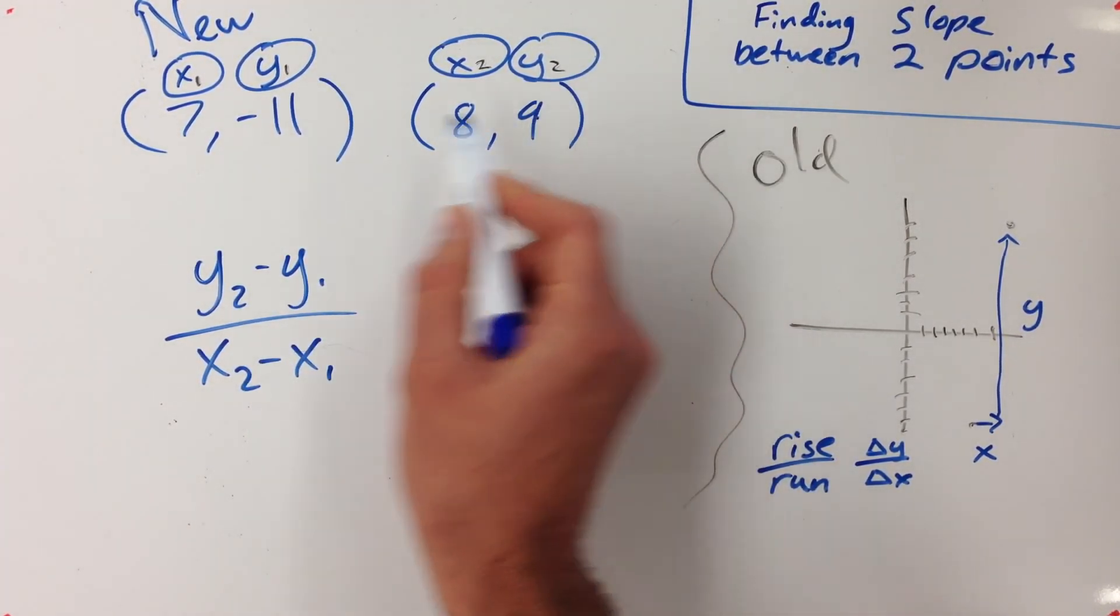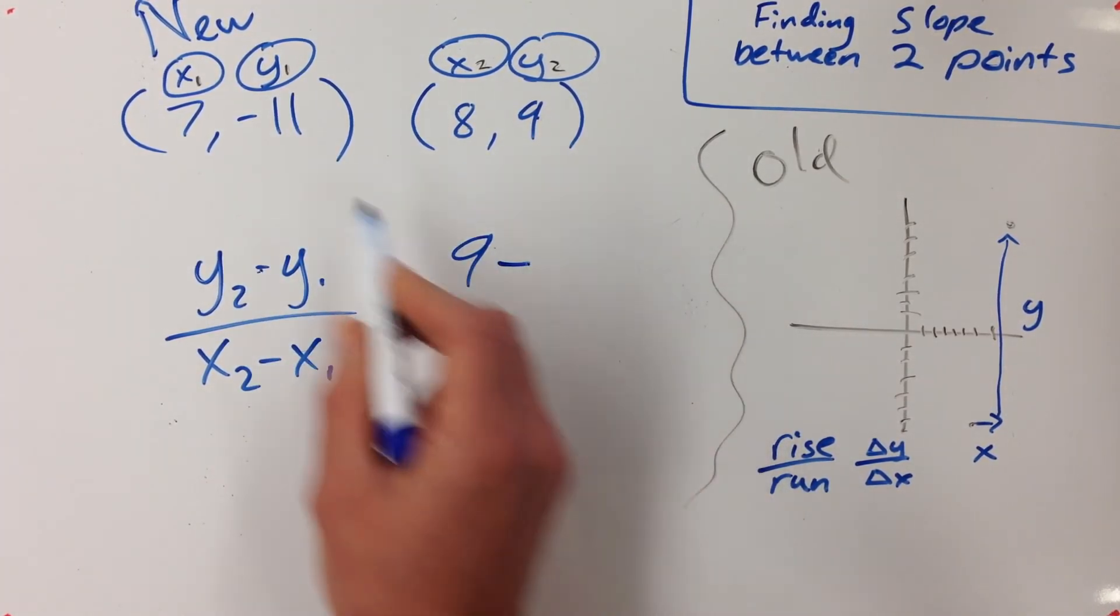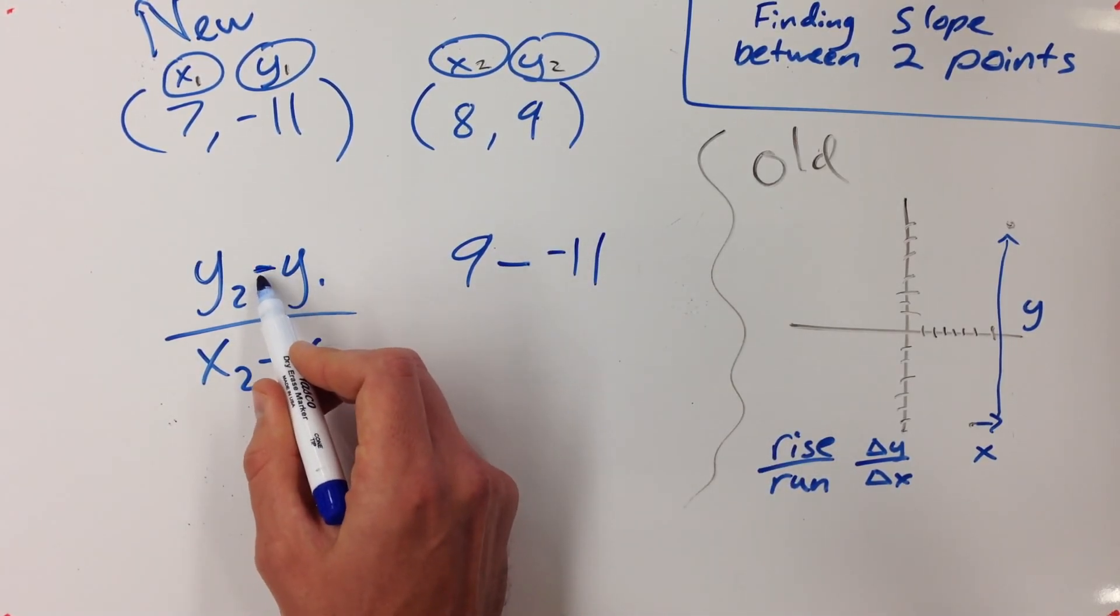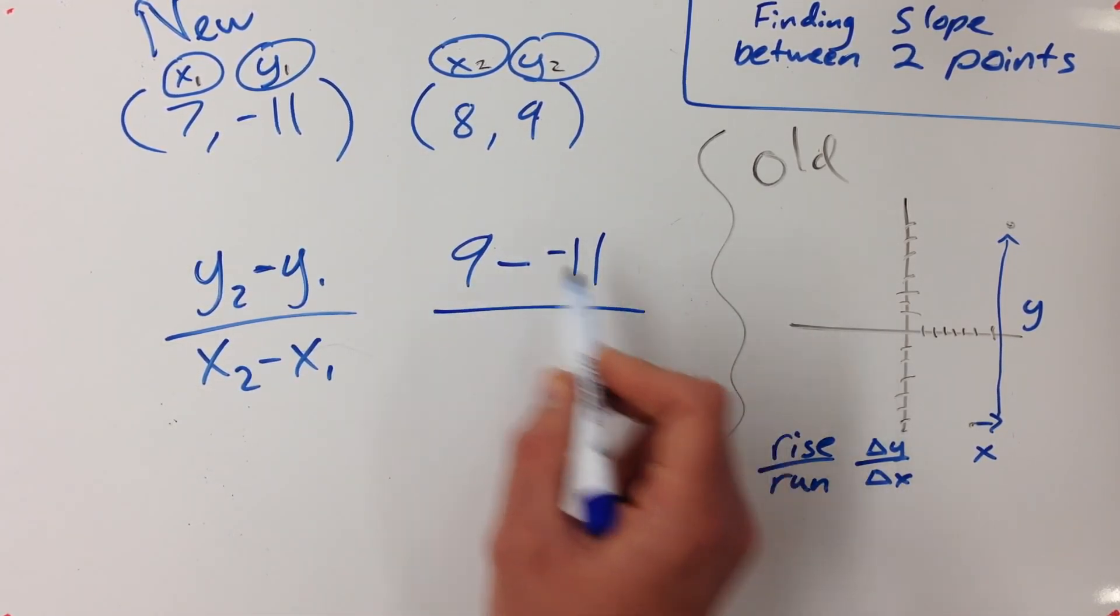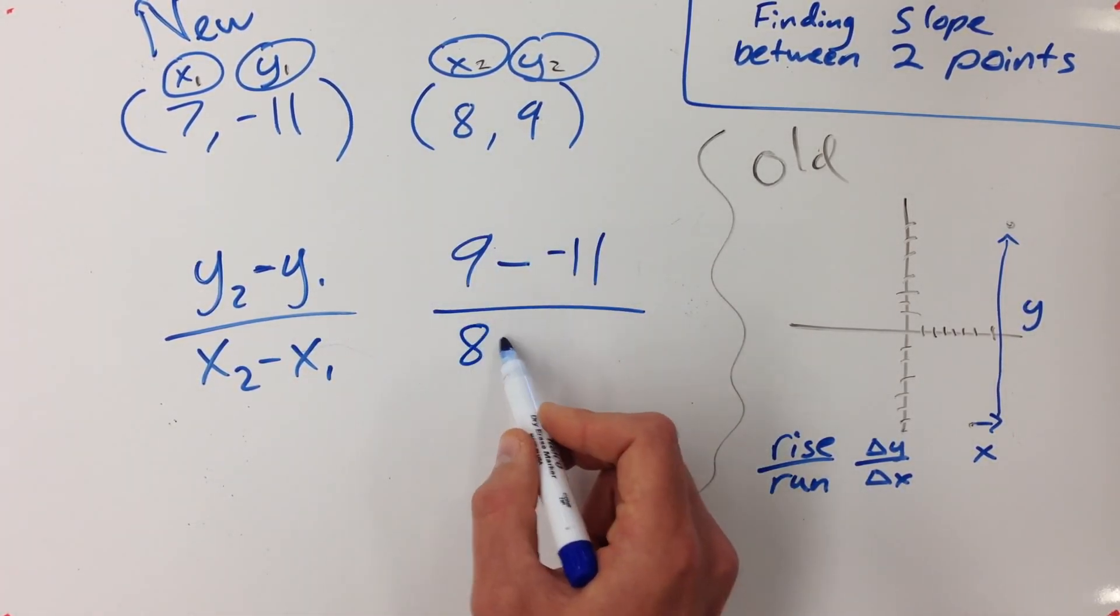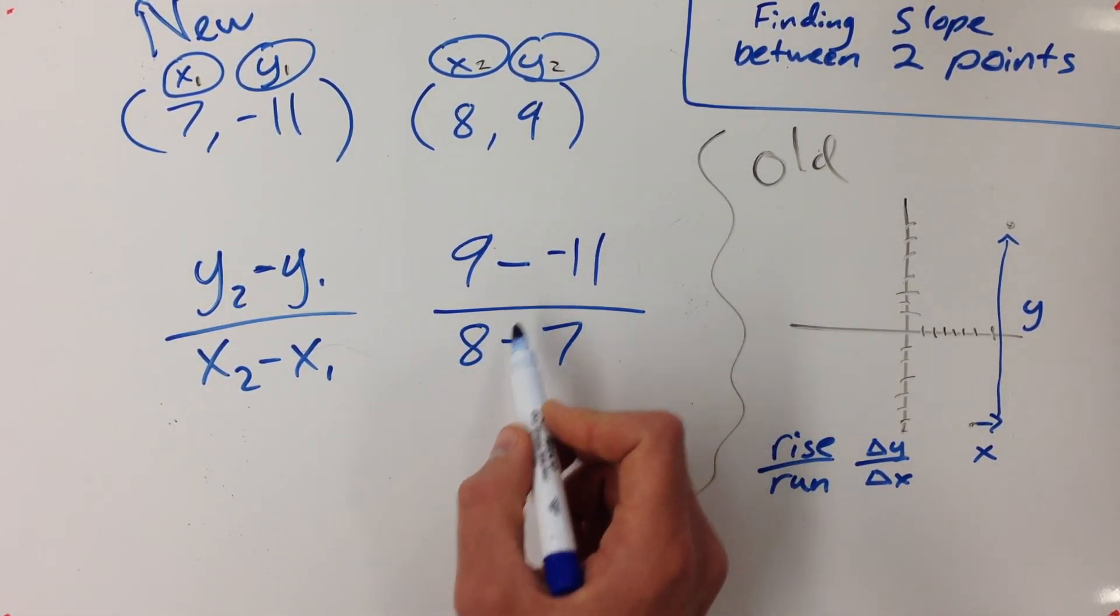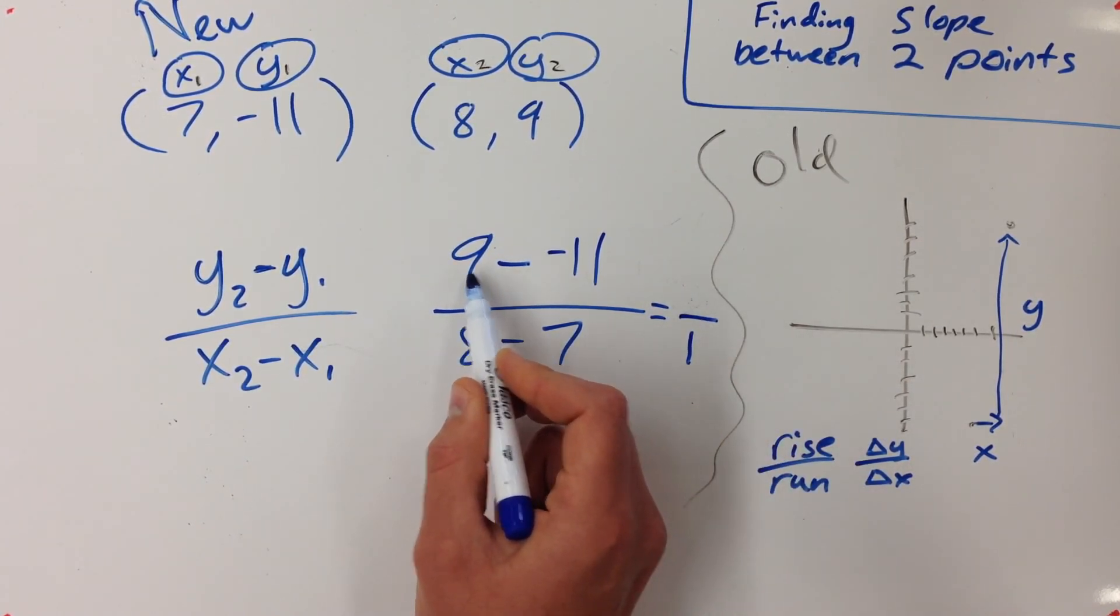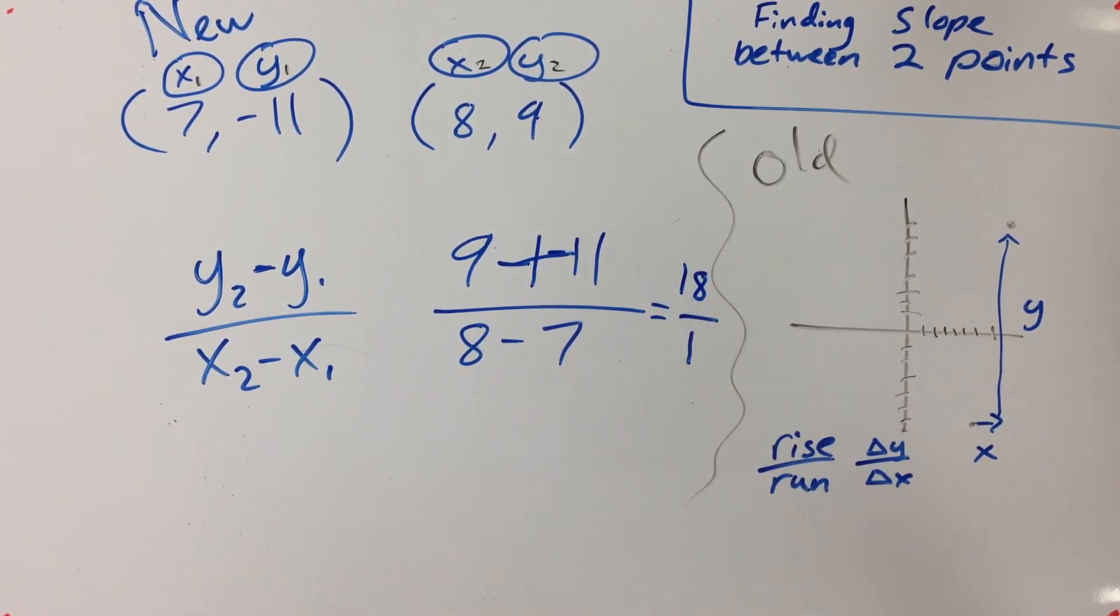y2 minus y1, so 9 minus negative 11. And then y1 is a negative 11. So this subtraction sign right here doesn't take into account that that's a negative 11. You have to include both of them. And then x2 minus x1. So now as I'm solving this, I can see 8 minus 7 is 1. And 9 minus a negative 11, if you subtract a negative, that's really addition. And you get 18. 18 over 1. So this slope is actually just 18.